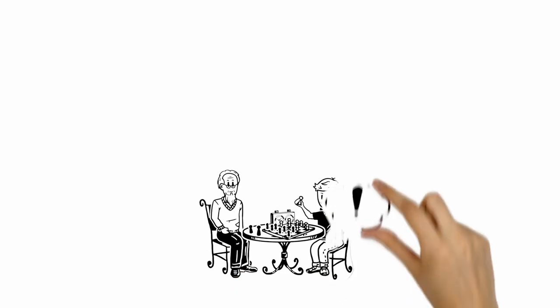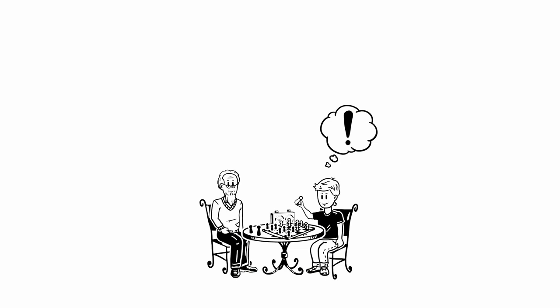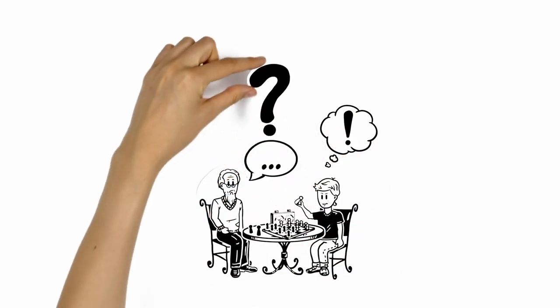This is Mike. Today he's visiting his grandfather. They are playing chess, but suddenly Mike notices something very strange. His grandfather can't speak properly and his face looks different. What is going on?